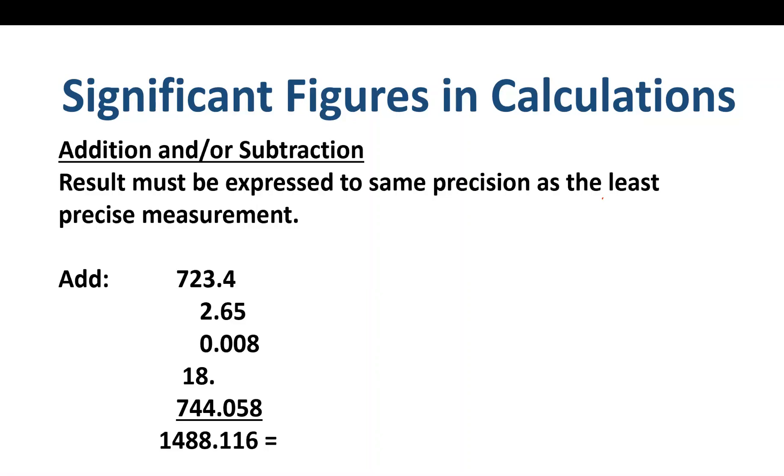Addition and subtraction are a little more challenging. When adding and subtracting, we don't pick the least amount of sig figs—we pick the least precise measurement. What I tell students: when we say precision, we mean the least placement value. Looking at our numbers, we have tenths, hundredths, thousandths—but this one is only to the ones place. Which one is the least precise placement?